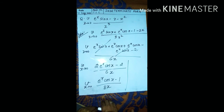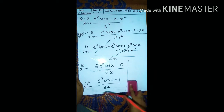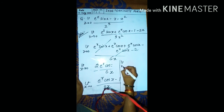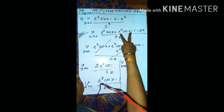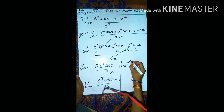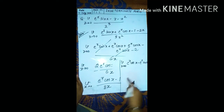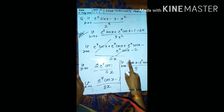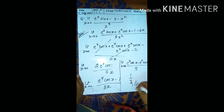Applying L'Hôpital's rule again with the product rule: limit x tends to 0 of (e to the power x times cos x minus e to the power x times sin x) upon 3. Differentiation of 1 is 0. Now apply the limits: e to the power 0 is 1, cos 0 is 1, sin 0 is 0, so we get 1 times 1 minus 1 times 0 upon 3, giving 1 upon 3 as the final answer.